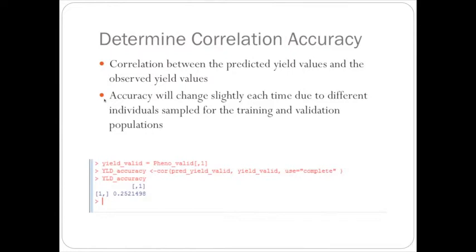And correlated that to the predicted yield values. And so the yield correlation accuracy was 0.25. And again, this number will change based on what individuals you have sampled. And so the 0.25 will vary a little bit based on the individuals that were sampled in the training population.